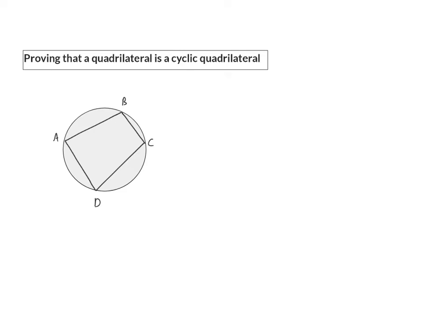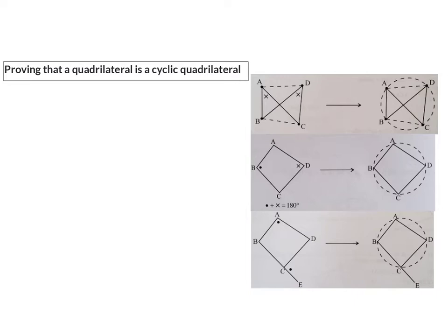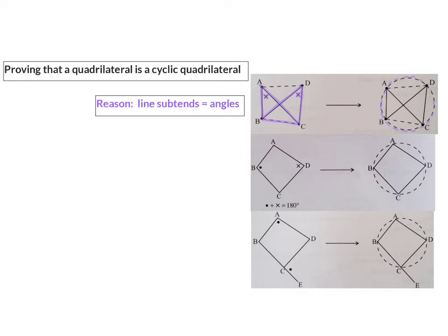For that, we're going to use the converse of the three theorems about cyclic quadrilaterals. The converse of theorem four says that if a line subtends two equal angles — in our case A and D — we can accept that it is a cyclic quadrilateral, meaning a circle can be drawn around it with all four angles on the circumference. The reason for this converse theorem: line subtends equal angles. Note that we use the word 'line' instead of 'chord' because in the picture it is not a chord yet.